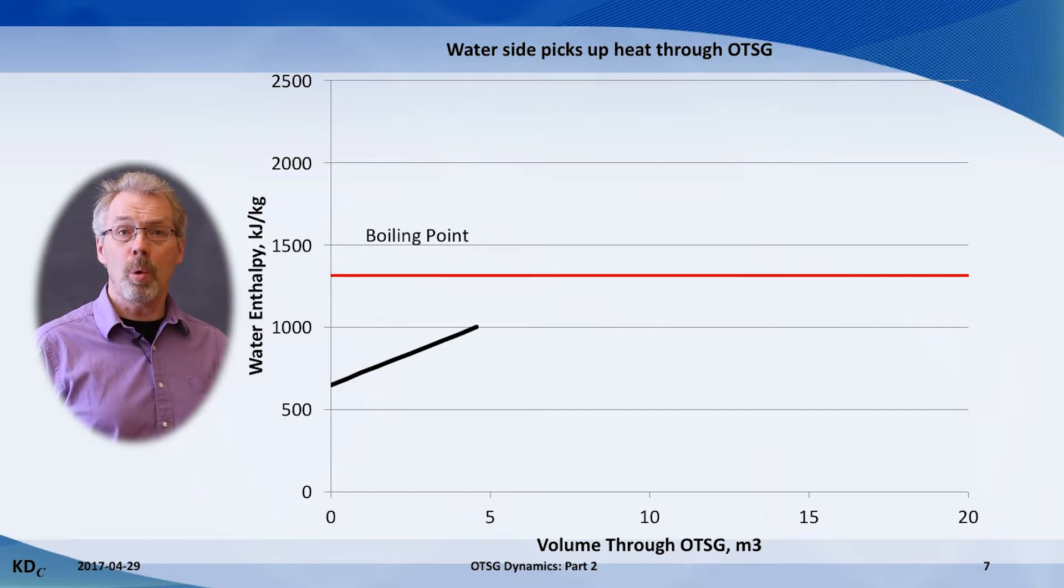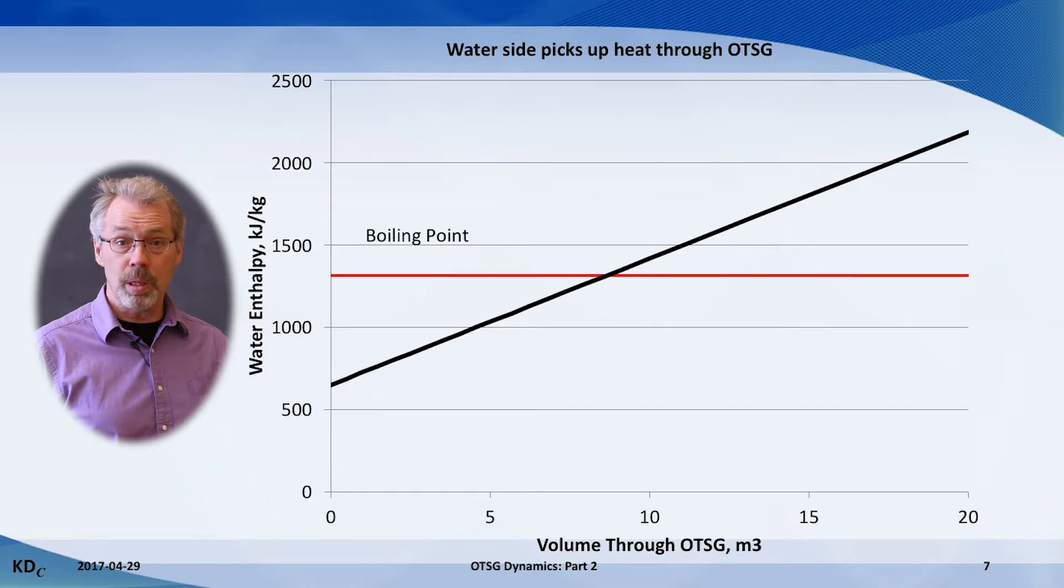In this region, the water expands only a small amount with the added heat. The fluid reaches the boiling point near the outlet of the convection section. At this point, the water boils and starts to form steam.